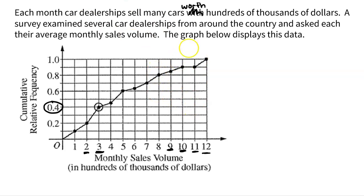Another great question: what's the flat line between $1 million and $1.1 million? It means not a single car dealership in the survey — not one — sold between $1 million and $1.1 million in volume for that month. Steeper lines, like between 4 and 5, mean more data fell there. 4 looks to be at about the 45th percentile and 5 at about the 60th percentile — so about 15% of dealerships sell between $400,000 and $500,000.